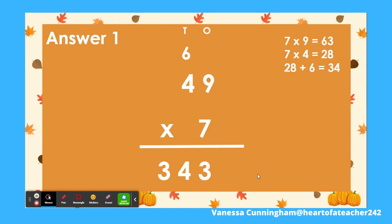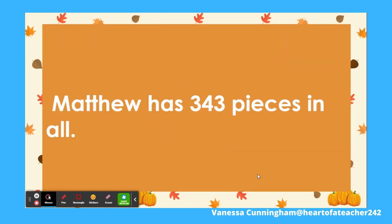Now it's time to multiply the tens. We say 7 times 4 equals 28. We cannot forget to add the 6 to the 28. When we add 28 plus 6, we get 34. So we write the 4 in the tens place below and the 3 in the hundreds place below. Matthew has 343 pieces in all.